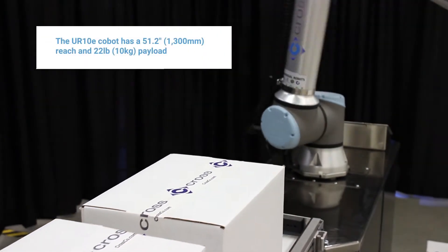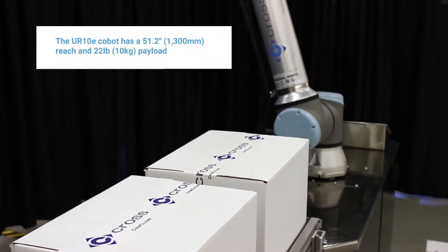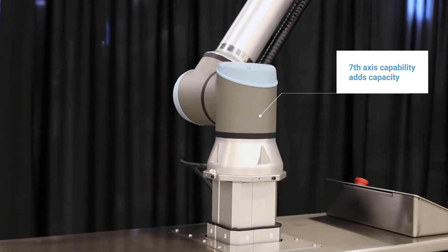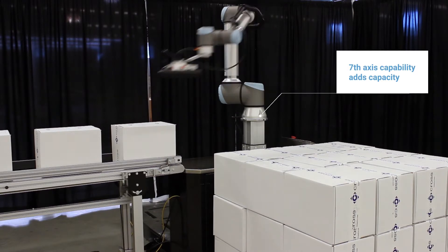Palatron can handle boxes up to 18 pounds and stack them neatly and consistently. A vertical pillar raises up to bring the robot to new heights, allowing it to stack palettes up to 6 feet high.